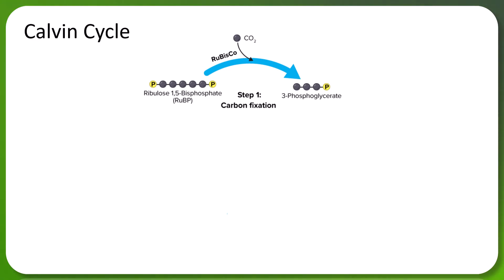To kick off the Calvin cycle, the first step is called carbon fixation. The Calvin cycle happens in the stroma of the chloroplast — we are still inside the chloroplast, but away from the thylakoid membrane, in the fluid contained within the inner membrane. The first step is initiated by an enzyme called rubisco, and ribulose 1,5-bisphosphate, or RuBP, which is our starting molecule, is going to be added to a molecule of CO2.